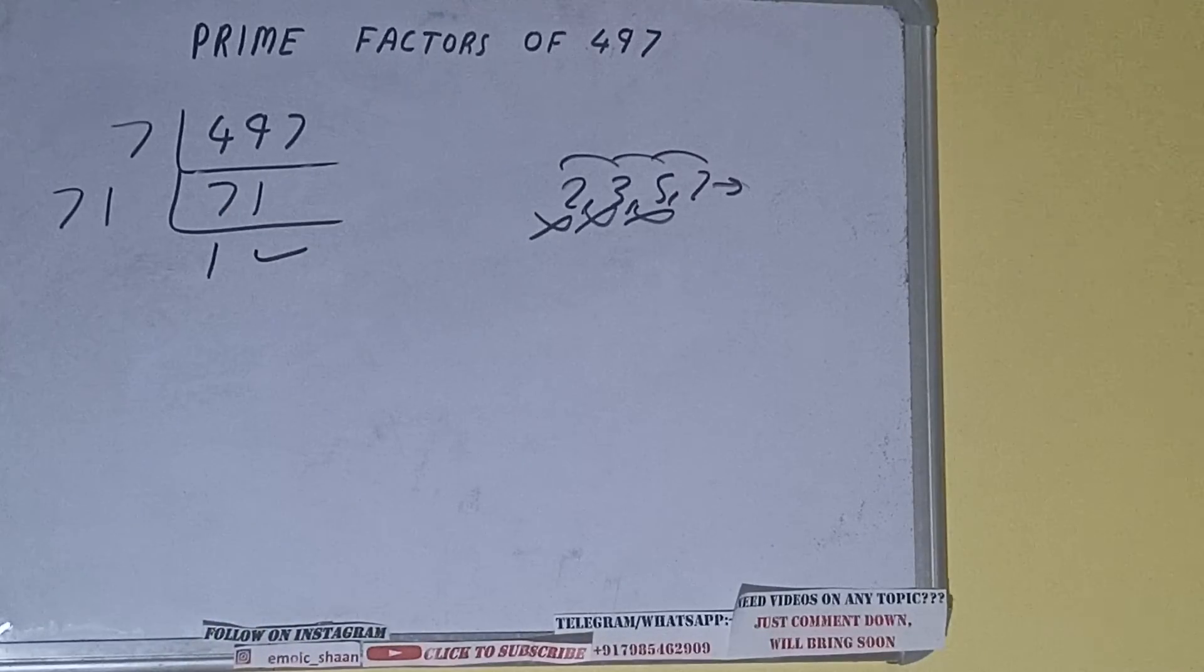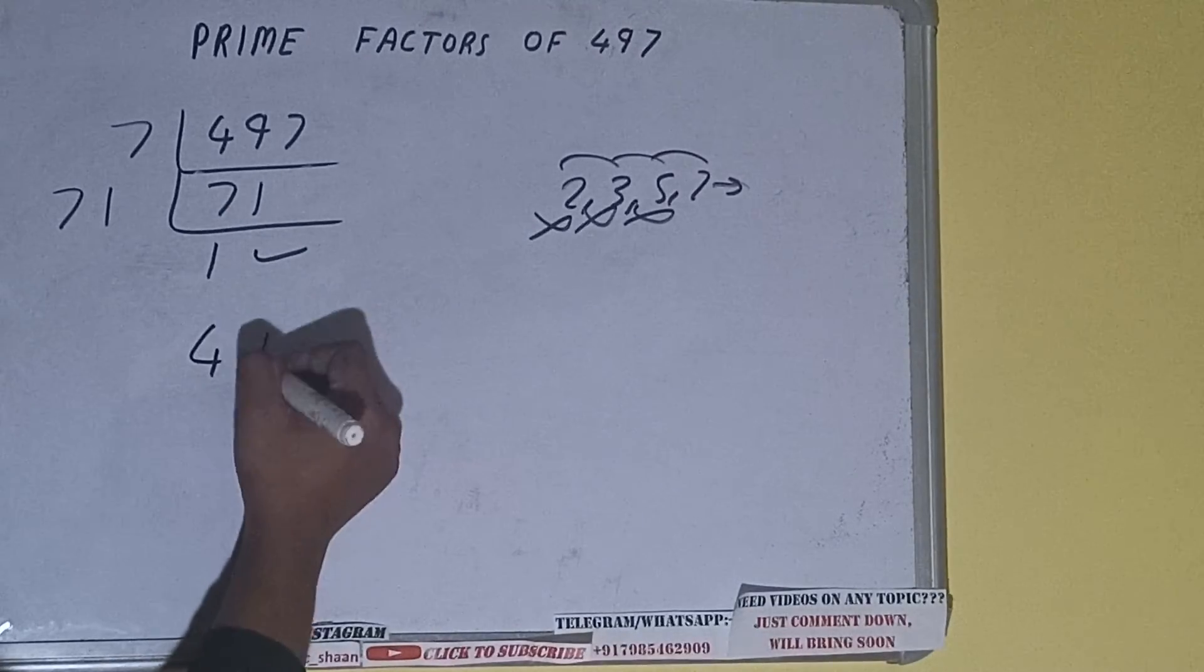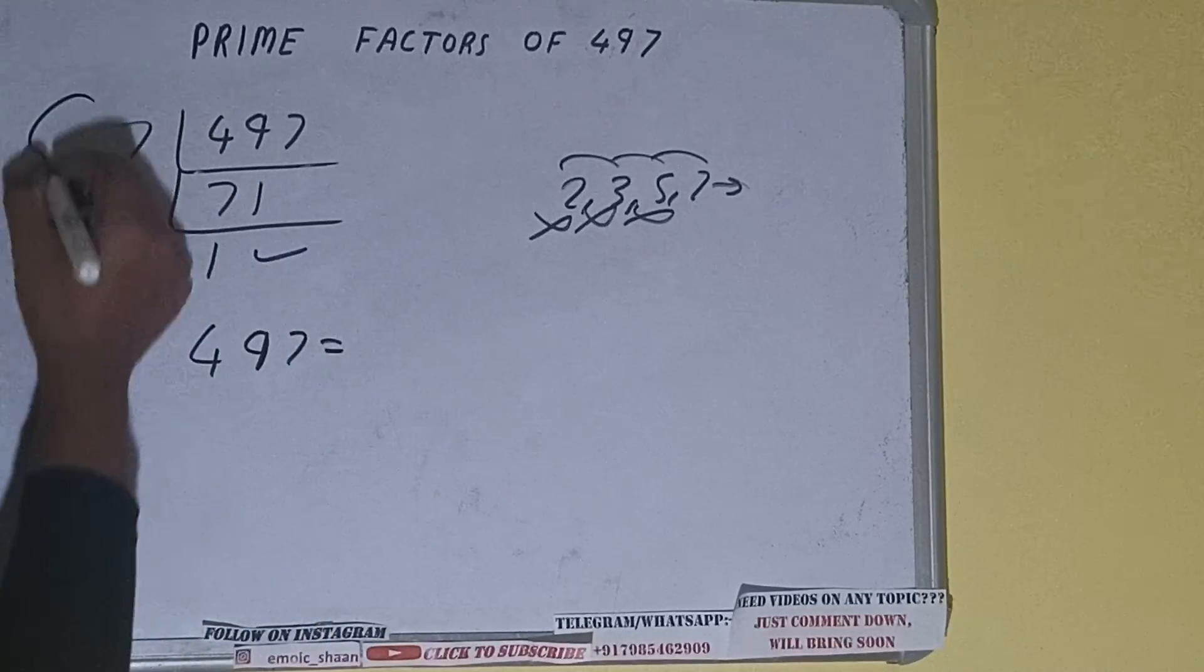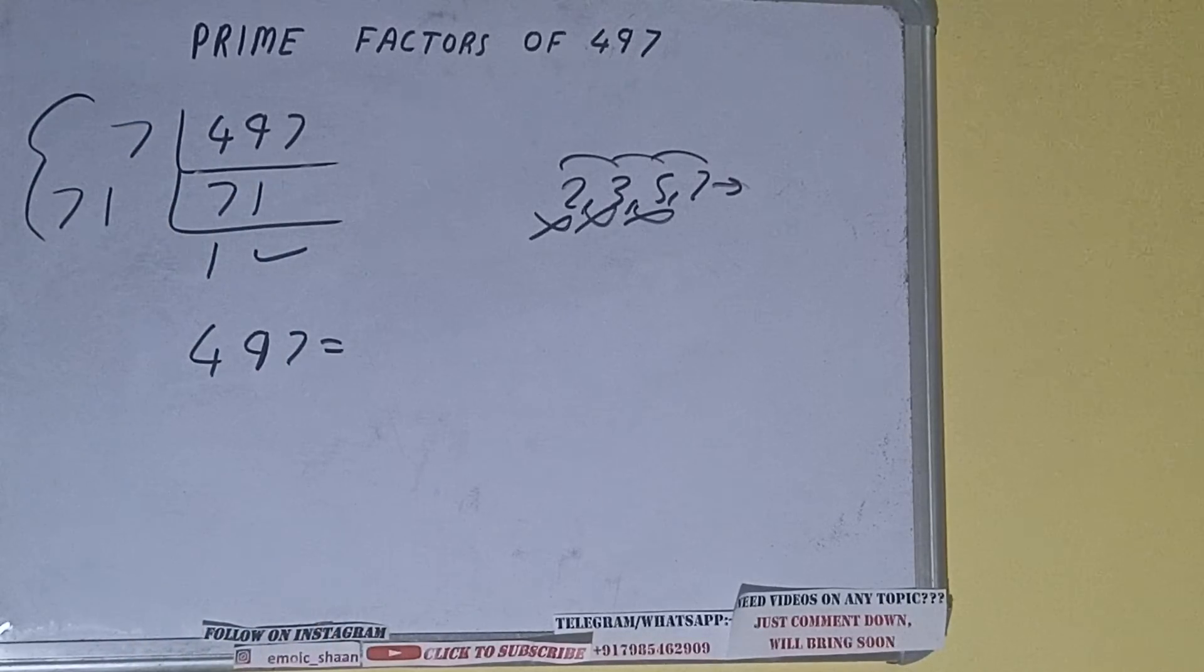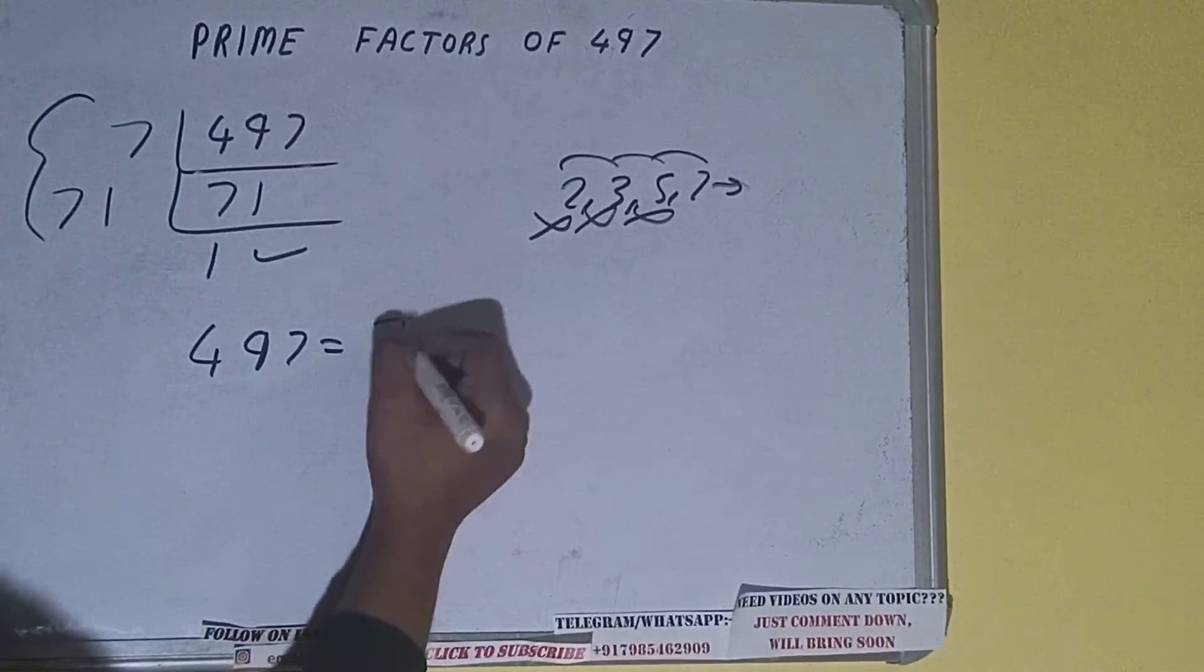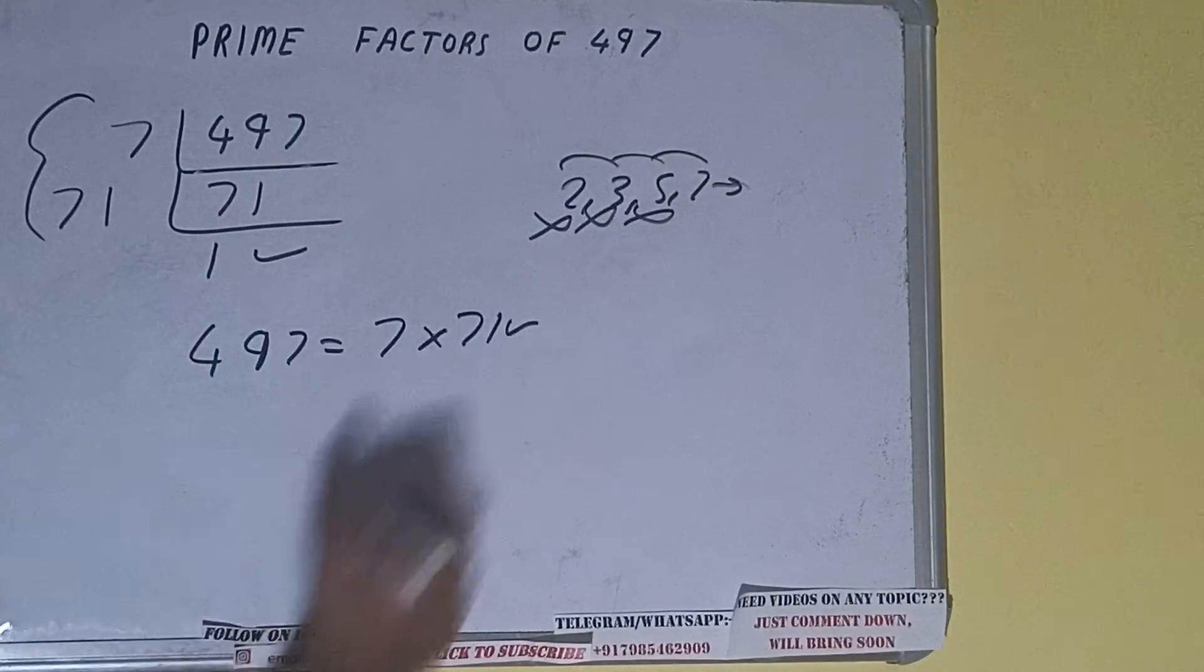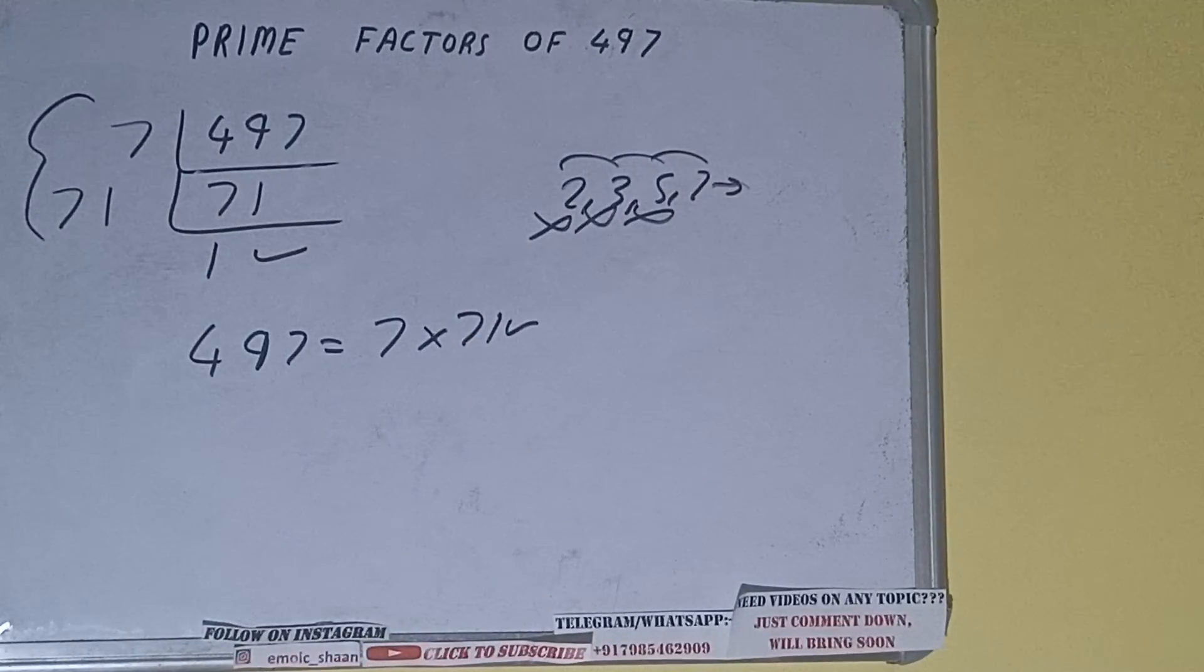The last step is to write the prime factorization: 497 equals the product of all the factors on the left-hand side, which is 7 × 71. That's the answer. So this is all about the prime factors of 497.